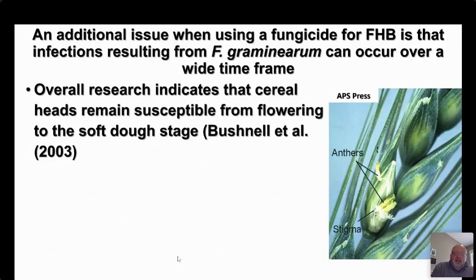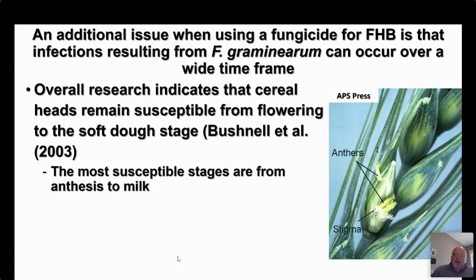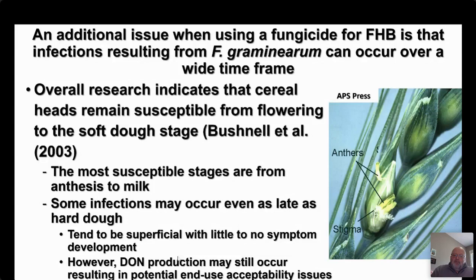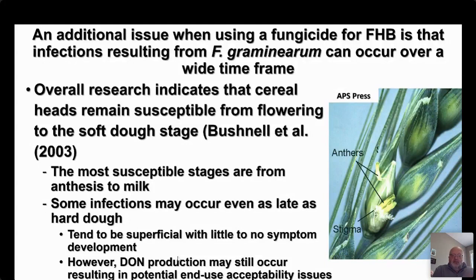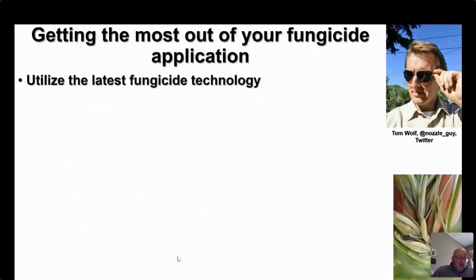Cereal heads remain susceptible from flowering to about the soft dough stage. The most susceptible stages are typically from anthesis to milk — anthesis is that key timing. Some infections may occur as late as hard dough stage; these tend to be more superficial with very little symptom development, so grain won't be downgraded due to FDKs. However, the fungus may still be superficially present and producing deoxynivalenol, so grain that looks fine may have issues with DON that create problems in terms of its end use.